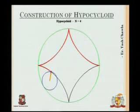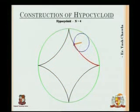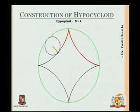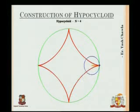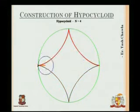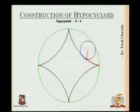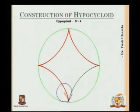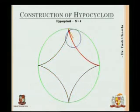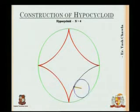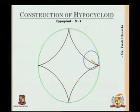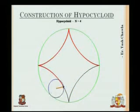Let's see an animation. Here we have a green directing circle, a blue rolling circle, and a red locus which has been traced by the point on the rolling circle. As you can see, it is rolling inside the directing circle, and the point tracing the red curve is known as a hypocycloid.